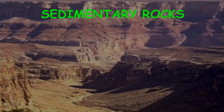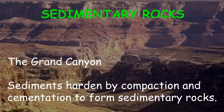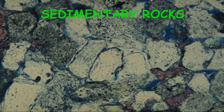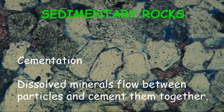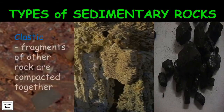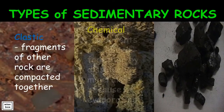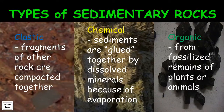In the Grand Canyon, sediments harden by compaction and cementation to form sedimentary rocks. In the process of cementation, dissolved minerals flow between particles and cement them together. There are three types of sedimentary rocks: clastic, in which fragments of other rock are compacted together; chemical, in which sediments are glued together by dissolved minerals because of evaporation; and organic, which come from fossilized remains of plants or animals.